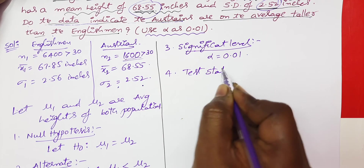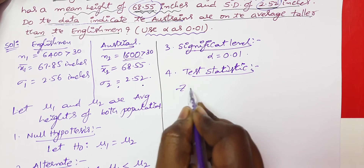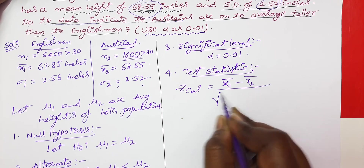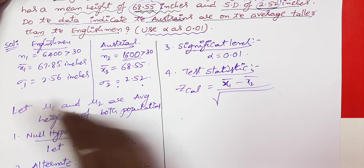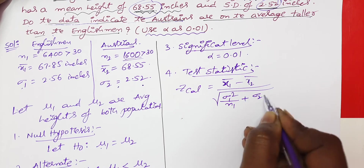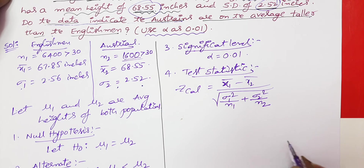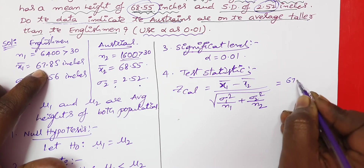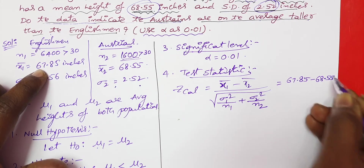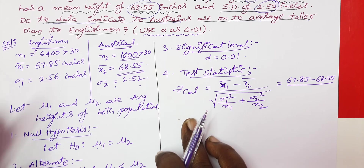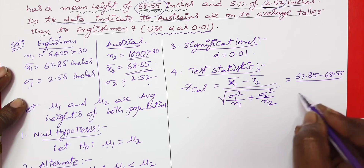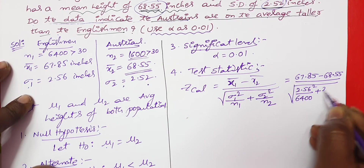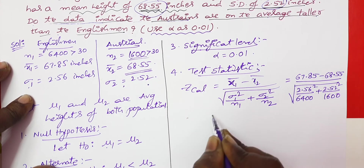The test statistic is the Z calculated value. The formula is: Z = (x̄1 − x̄2) divided by the square root of (σ1² / n1 + σ2² / n2). Substituting: (67.85 − 68.55) divided by the square root of (2.56² / 6400 + 2.52² / 1600).